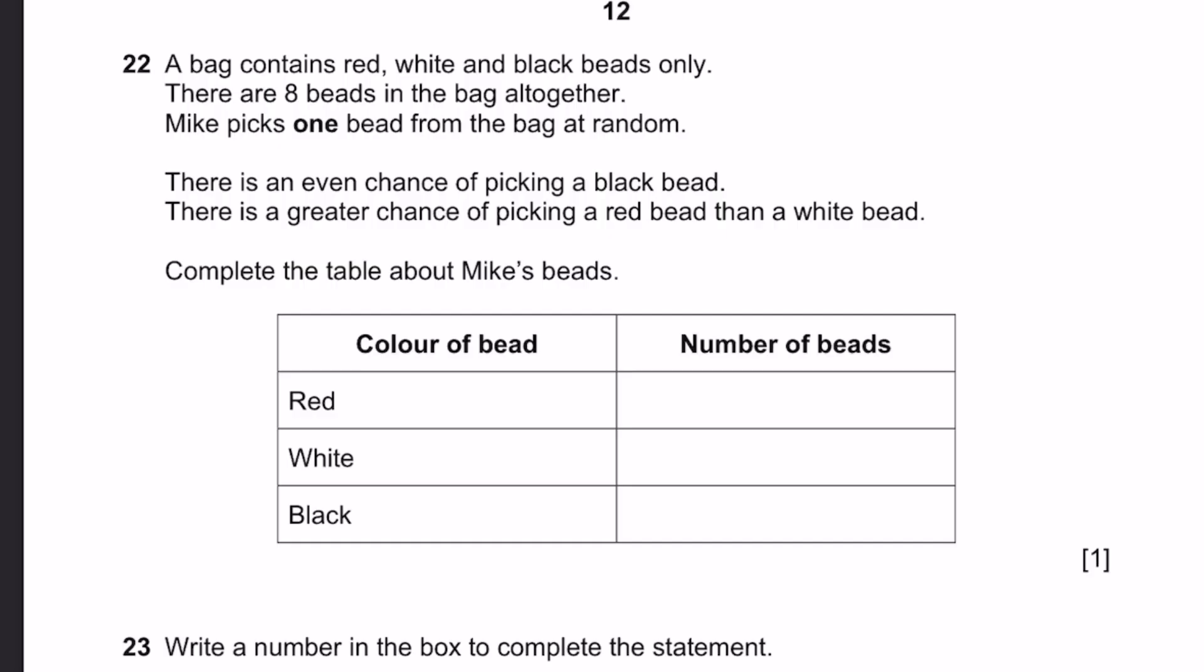Question 22. A bag contains red, white and black beads only. There are 8 in the bag altogether. Mike picks one bead from the bag at random. There's an even chance of picking a black bead. First we notice that's even, that means black is going to be 50-50 or 0.5. There's a greater chance of picking a red bead than a white bead. So that means the probability of picking a red bead is going to be greater than white.